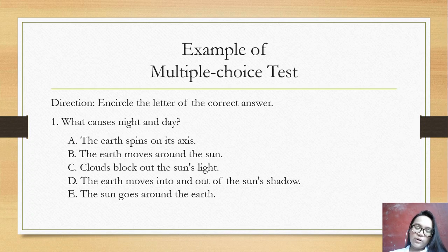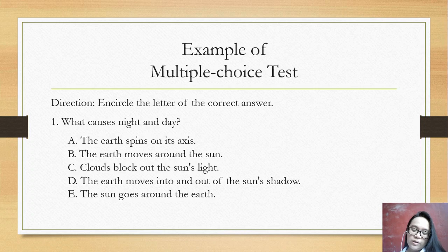So here is an example of a multiple choice test. Encircle the letter of the correct answer. The question is: what causes night and day? The choices are A: The earth spins on its axis. B: The earth moves around the sun. C: Clouds block out the sun's light. D: The earth moves into and out of the sun's shadow. E: The sun goes around the earth. So there is only one correct answer from the choices. So choose and circle the letter of the correct answer.